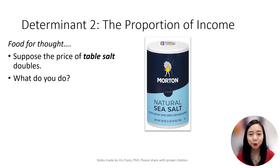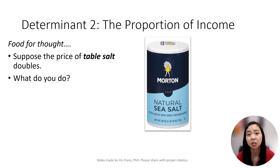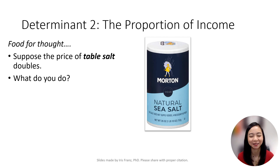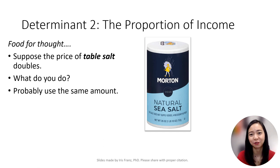The second determinant is proportion of income. Suppose the price of table salt doubles — what do you do? Are you going to say, oh my gosh, the price of salt doubled, I better start to save on table salt? Of course not. Because salt is so cheap that it only uses a tiny proportion of your income. So when the price of salt doubles, your quantity demanded for salt does not change much.